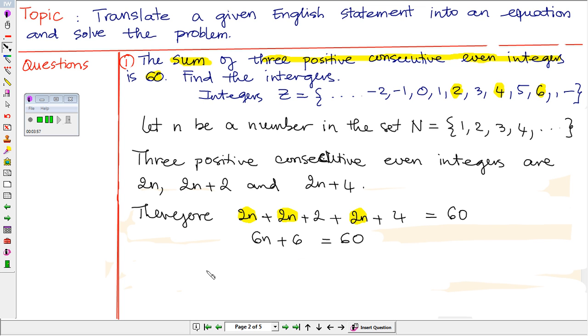Now we solve for n. First, we want to know what that natural number is. We subtract 6 from both sides, then we divide both sides by 6. So n equals 54 divided by 6, which is 9.